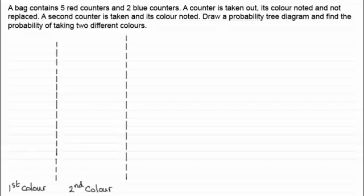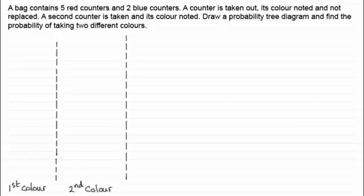I'm assuming you're familiar with drawing probability tree diagrams for something like this — if not, do go back and check out those earlier tutorials. I would encourage you to put down the trials. In this case we've got two trials: the first trial is the first colour, and the second trial is the second colour we take from the bag. So the tree diagram would look something like this.